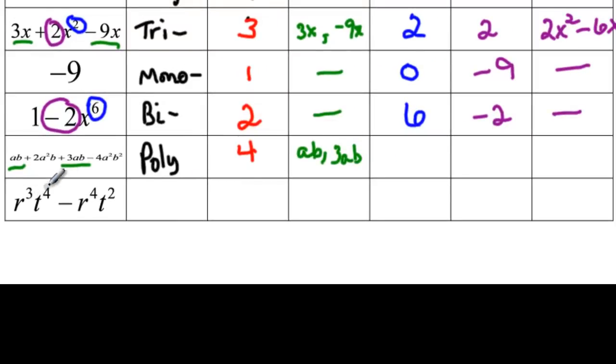Now, the other two are not like terms because this one has an a², but only one factor of b in the term. And this one over here has the a², but it has two factors of b with it, so they're not like terms.